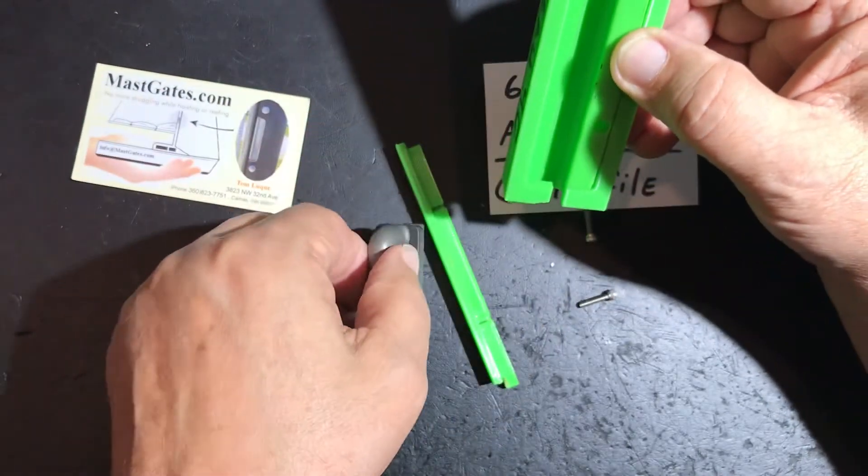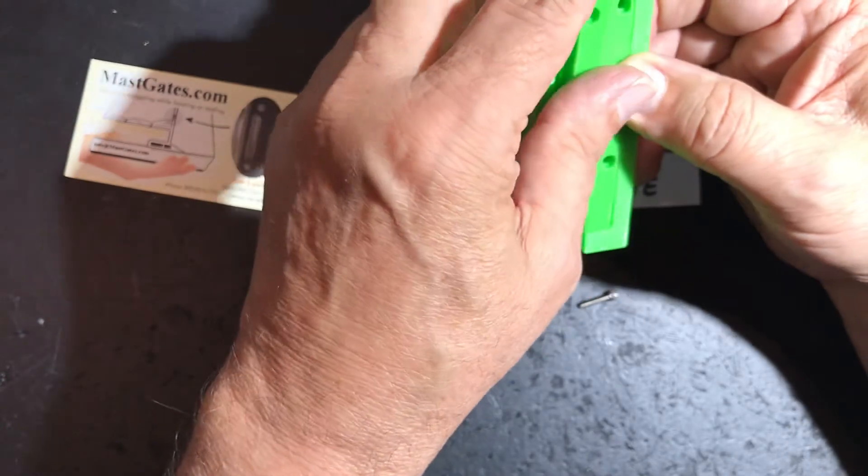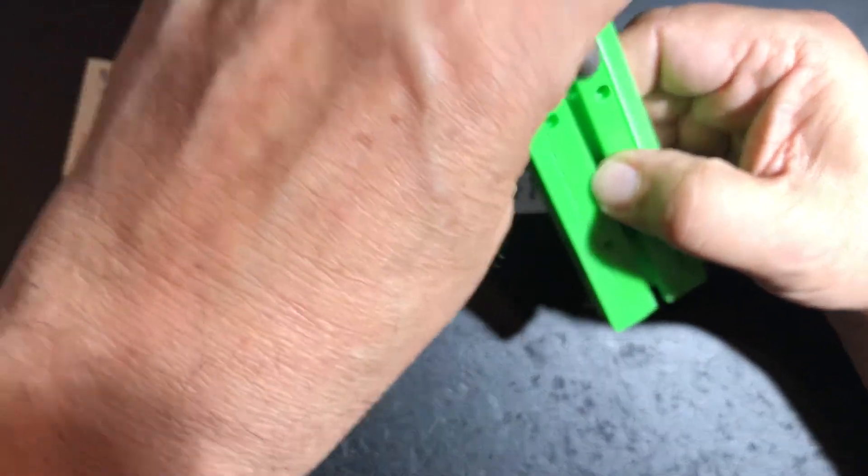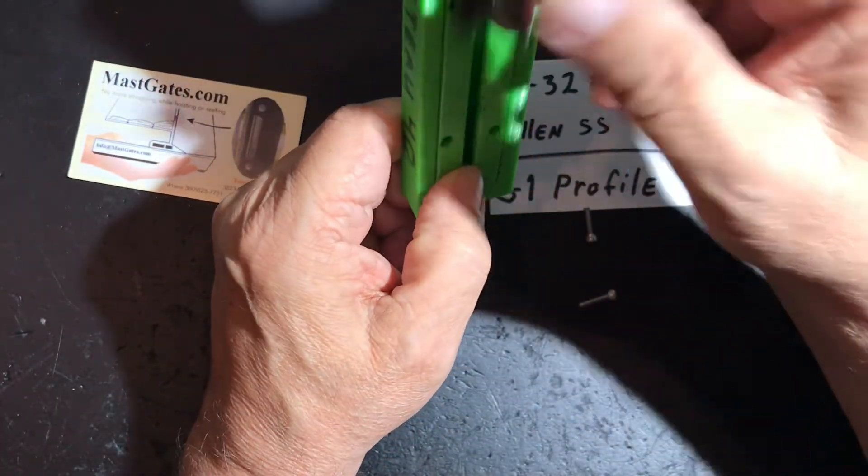Once your sail is on, then you take your remaining insert and drop that into place. Install the screws and now your sail can freely slide up and down past your feed slot.